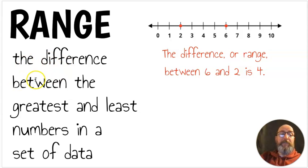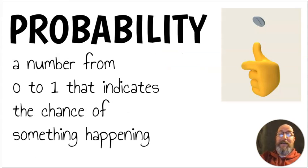Range. The difference between the greatest and least numbers in a set of data. So I have two numbers here, two and six. I put points there. Two is the least number. Six is the greatest number. And the difference, or range, between six and two is four. So the range is the difference between the greatest and least numbers in a set of data. And last, probability. Probability is a number from zero to one that indicates the chance of something happening. If we flip a coin, you're going to get heads or tails. So you have to figure out what the probability would be that that would happen. So again, probability is a number from zero to one that indicates the chance of something happening.